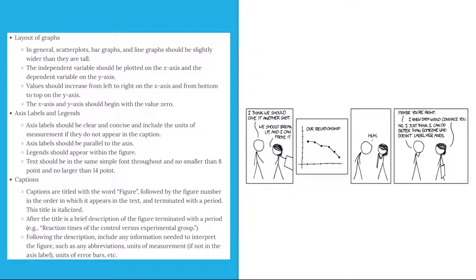So the layout of graphs. In general, scatter plots, bar graphs, and line graphs should be slightly wider than they are tall. The independent variable should be plotted on the x-axis, and the dependent variable should be plotted on the y-axis. Values should increase from left to right on the x-axis, and from the bottom to the top on the y-axis. The x-axis and y-axis should begin with the value 0.